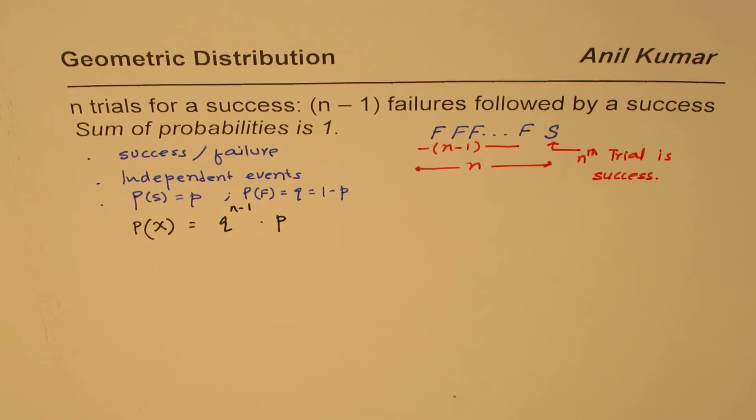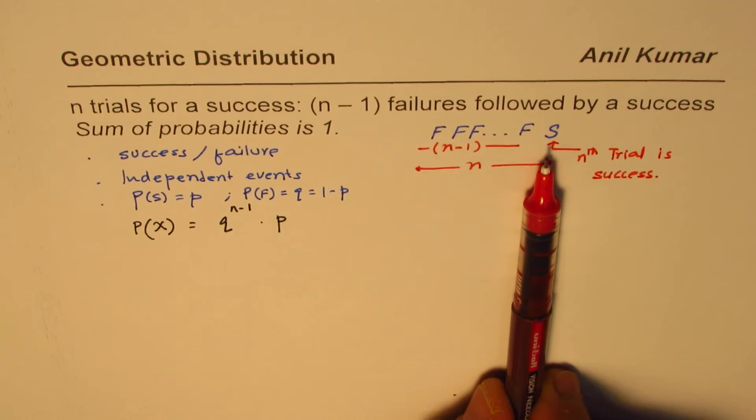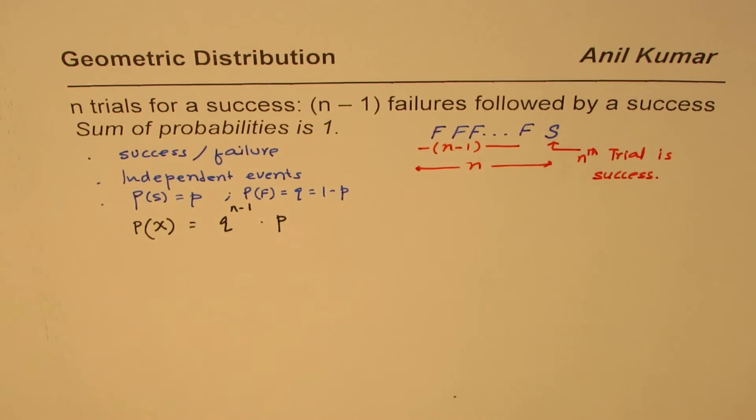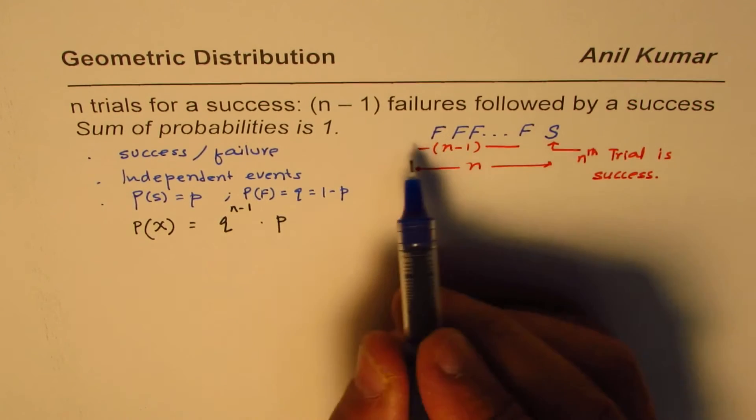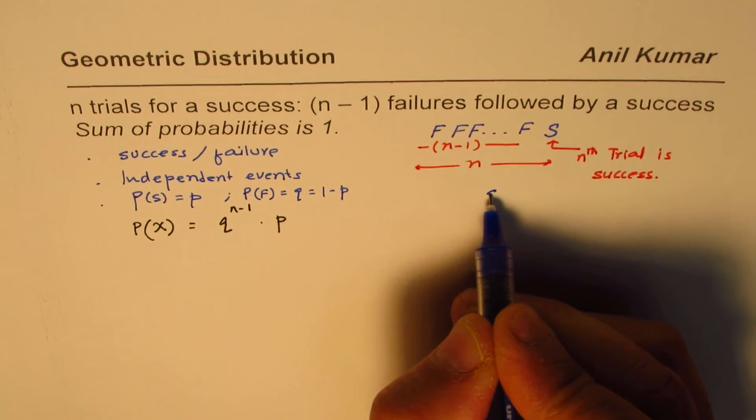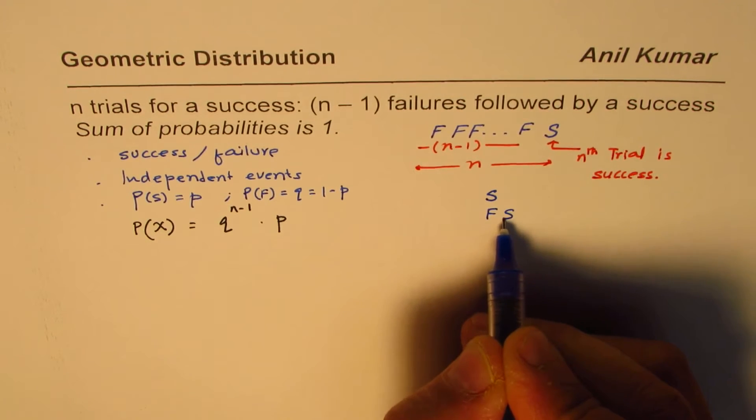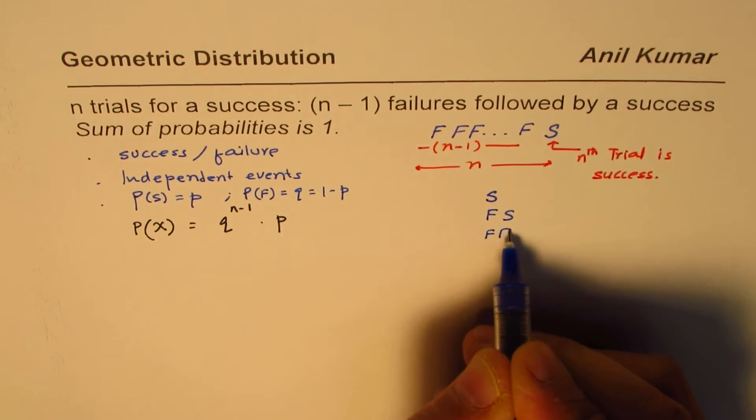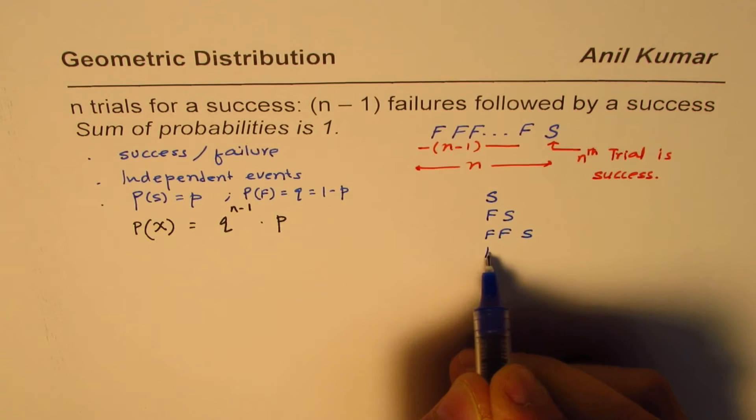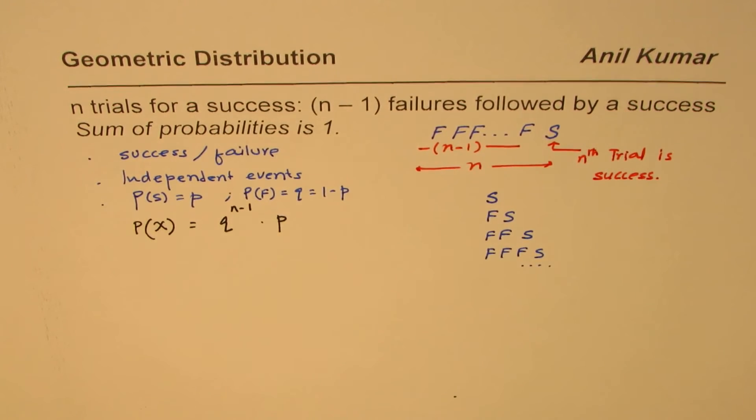Now, as you can see, in this distribution, you could have success in the very first turn. So if you see, the series will be kind of like this. We may have success. We may have a failure and then success. We may have two failures and then success, or three failures and then success, and so on. So that is a general term for us.